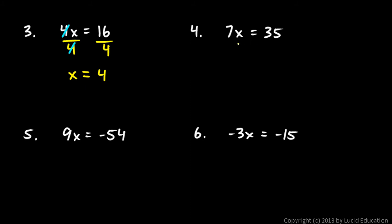Number 4: 7x equals 35. I can divide both sides by 7, and the 7 in the numerator and the denominator cancel out, leaving me with just x on the left. x equals 35 divided by 7, which is 5.